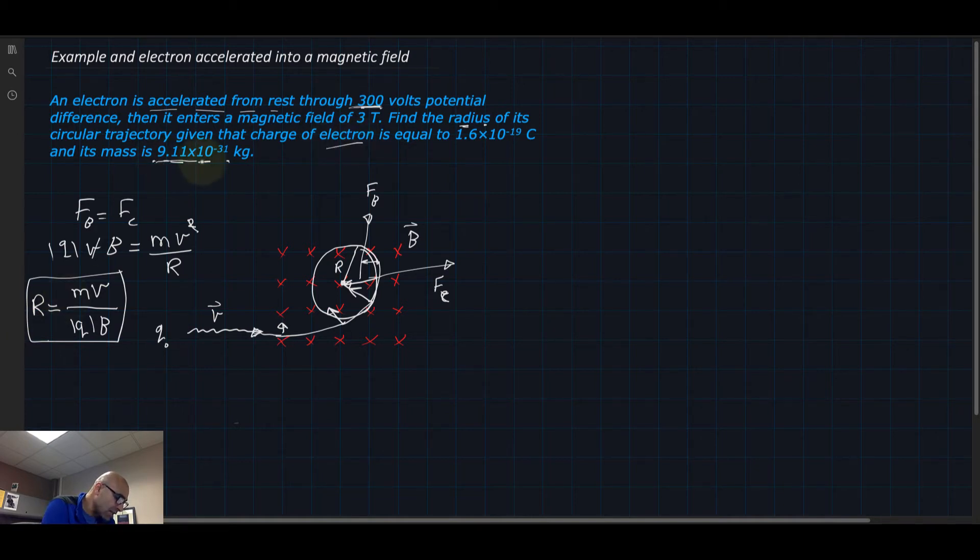Do we have the charge of the electron? Yes, that's given. Do we have B, the magnetic field? Yes. We don't have the velocity of the electron, and we need to find the radius.